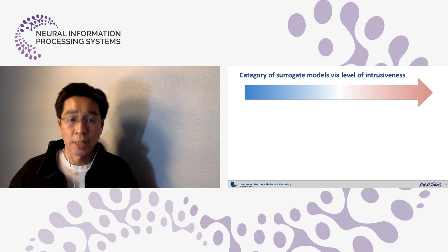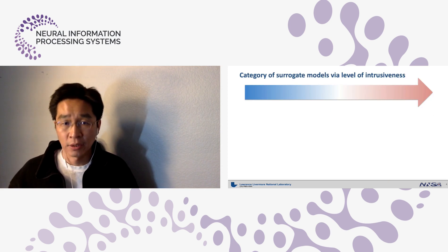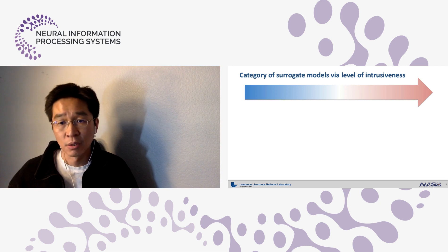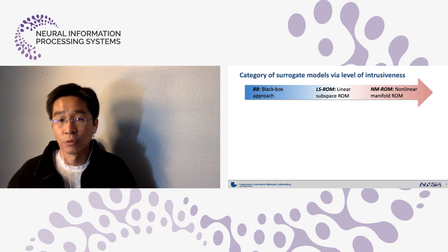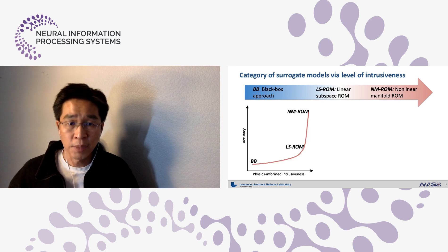These surrogate models can be categorized by its level of intrusiveness. For example, from black box approach denoted as BB, which is the least intrusive method, to the linear subspace reduced-order model and nonlinear manifold reduced-order model, which are fully intrusive. Roughly speaking, more intrusiveness means more accuracy.